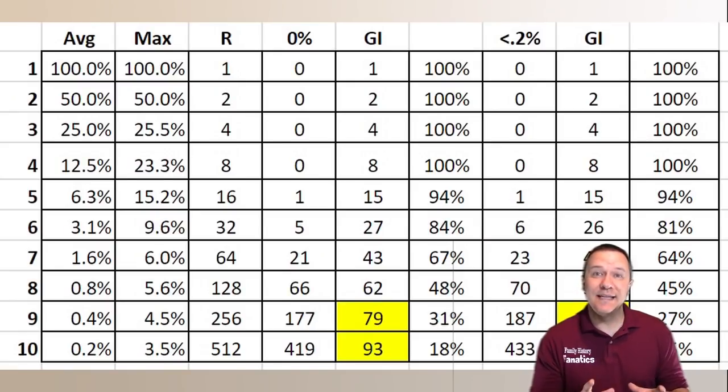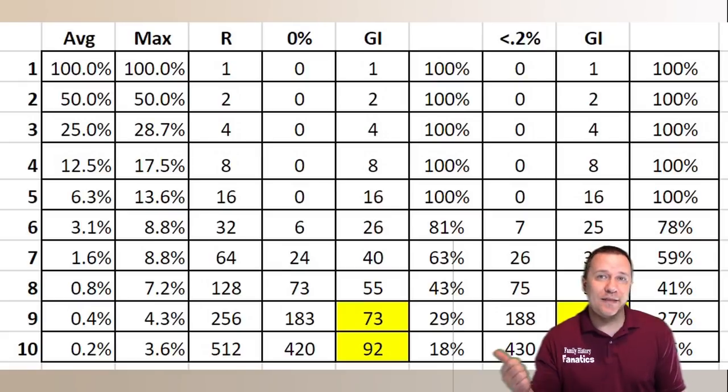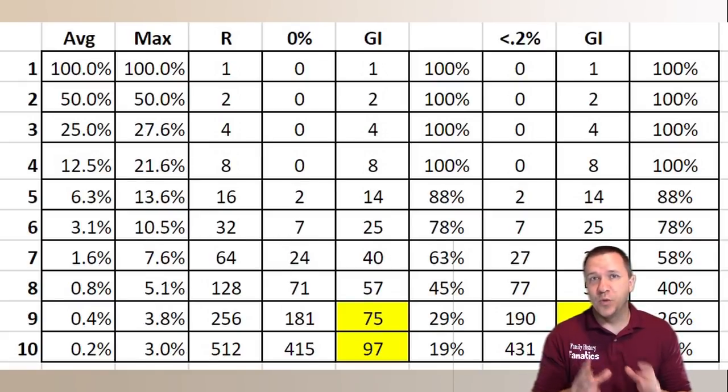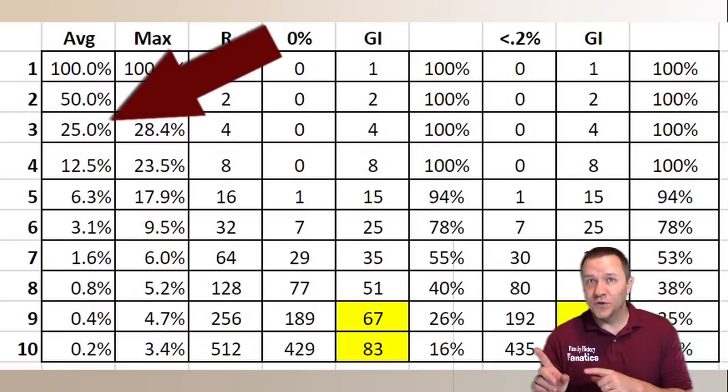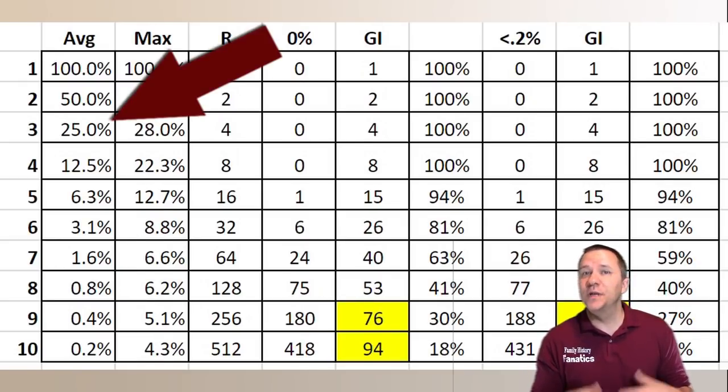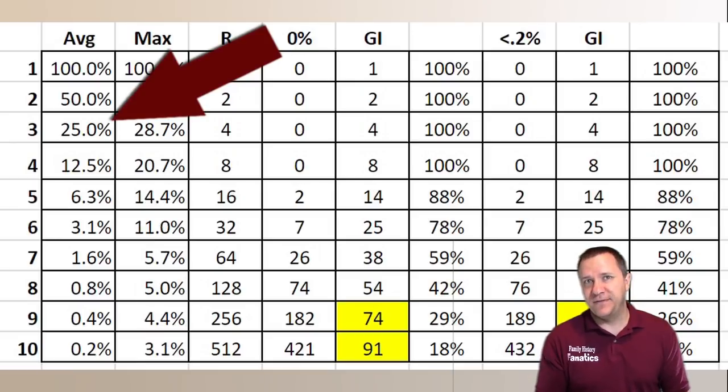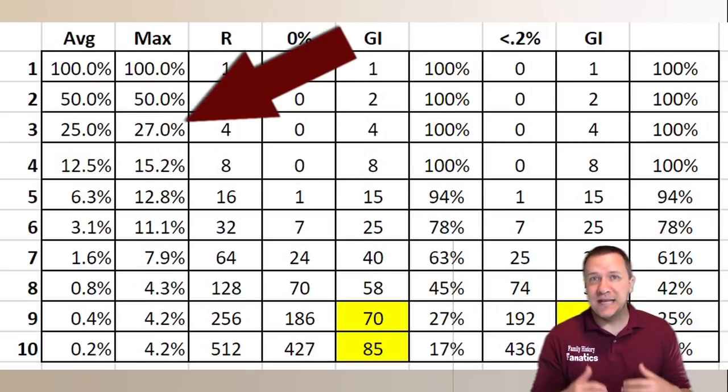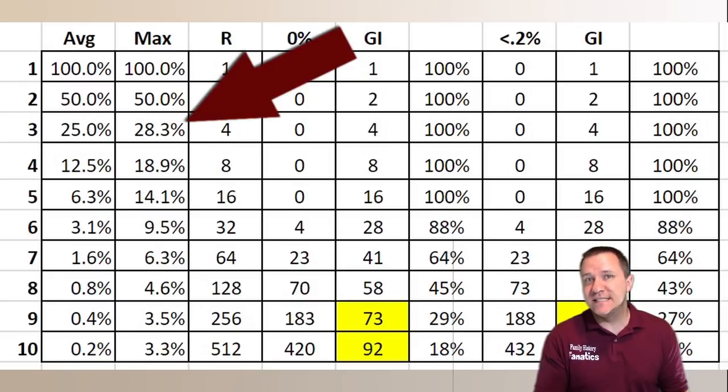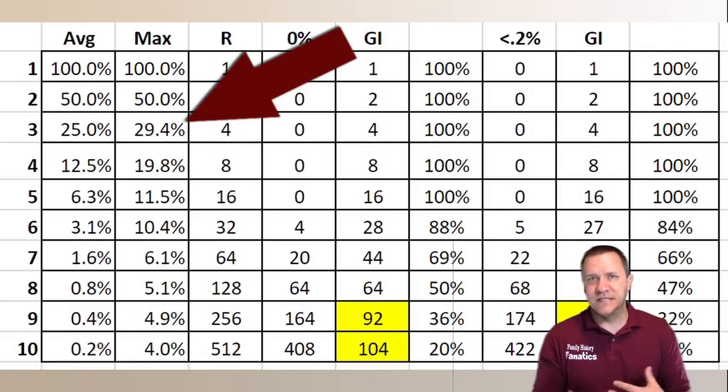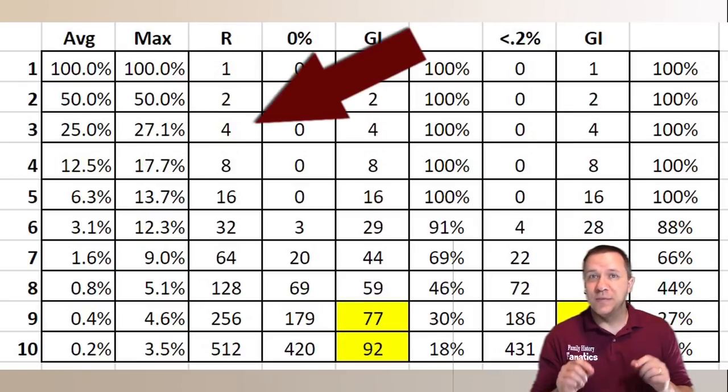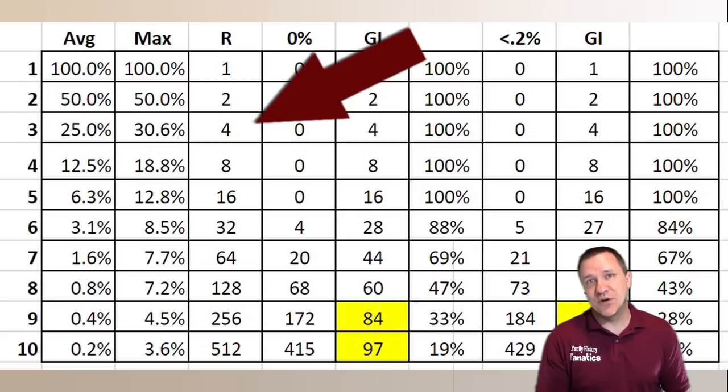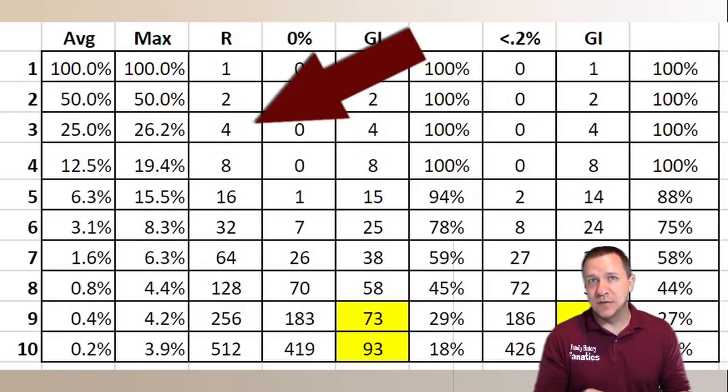Now I extended this out further to 10 generations in order to create this table here. Let me go through each of the columns so you can understand what it is showing. This first column is the average amount of DNA that you would expect based on halving your DNA each generation. The second column is the maximum amount of DNA that we actually see in that generation based on the simulation. The third column is the number of direct ancestors that you have in that generation. So it also doubles each generation.